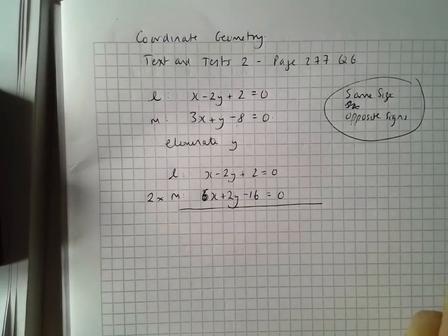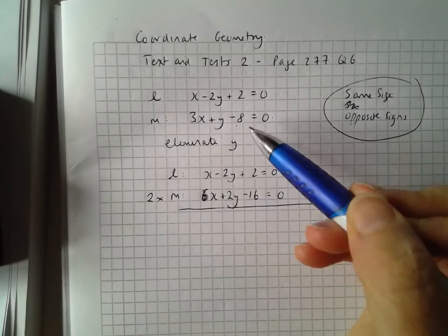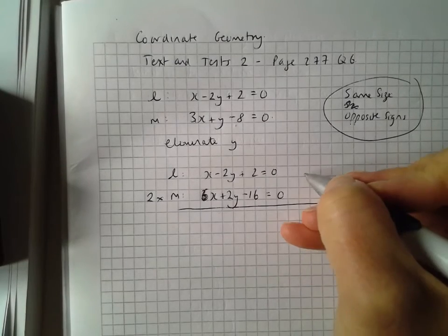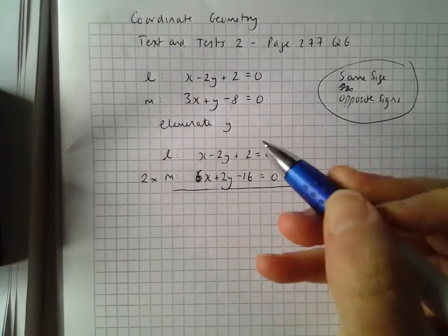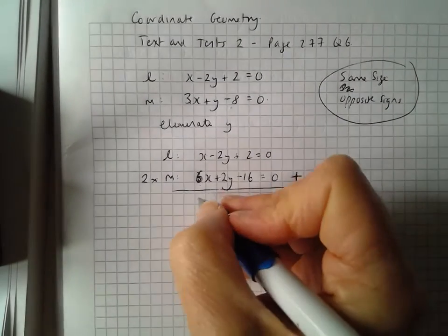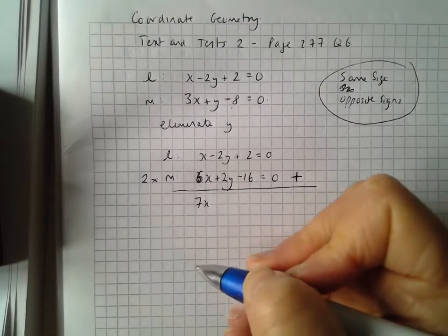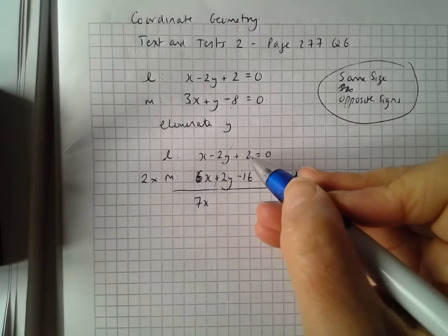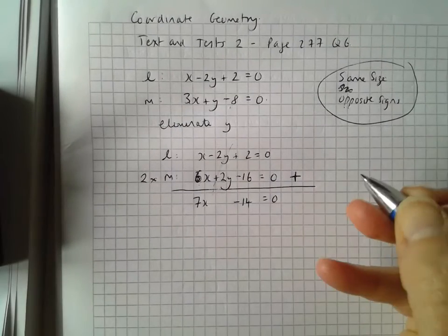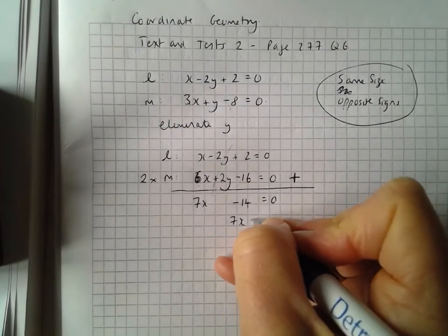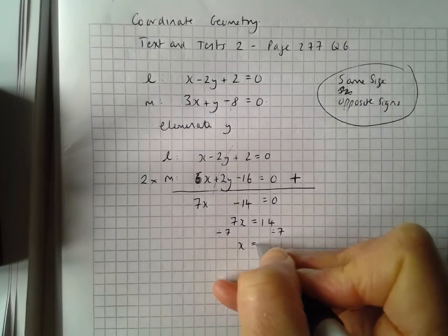So 2 by 3x gives me 6x, 2 by y gives me 2y, 2 by minus 8 equals minus 16. So this is L and this is 2M. I'm going to add these two lines together. x plus 6x is equal to 7x. Minus 2y and plus 2y cancel each other out — they're gone. And then 2 plus minus 16 is minus 14. So I've got 7x minus 14 equals 0, which means 7x equals 14. Dividing by 7, x is equal to 2.